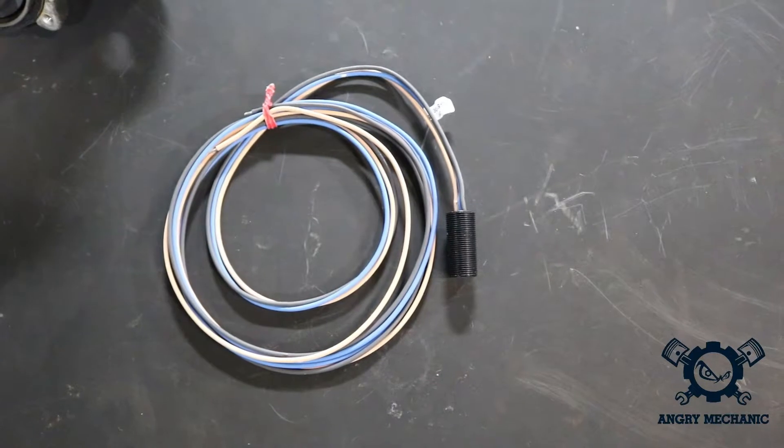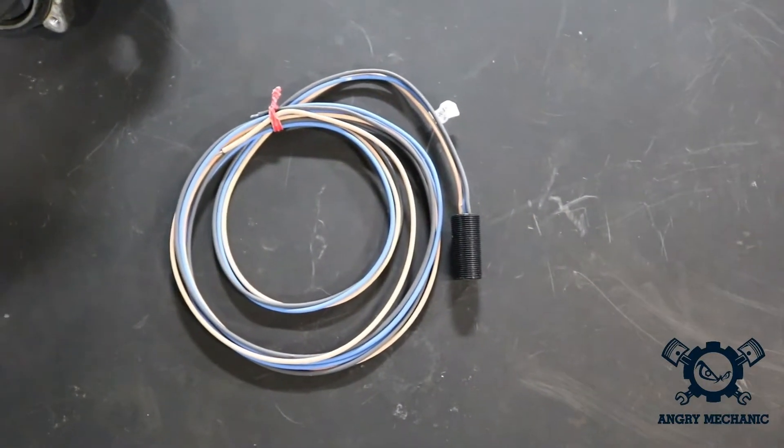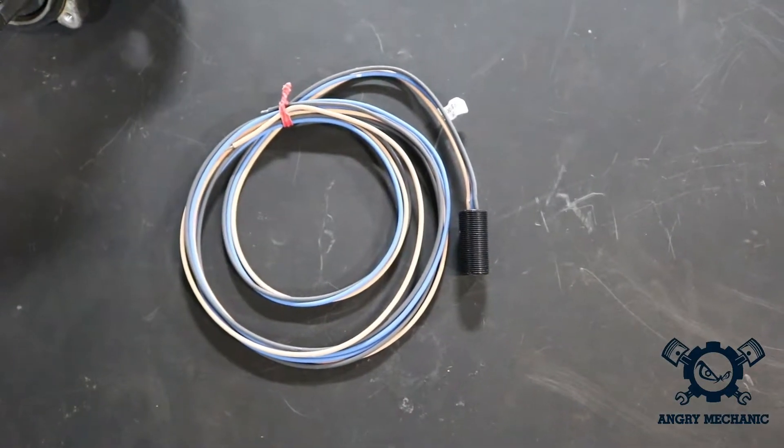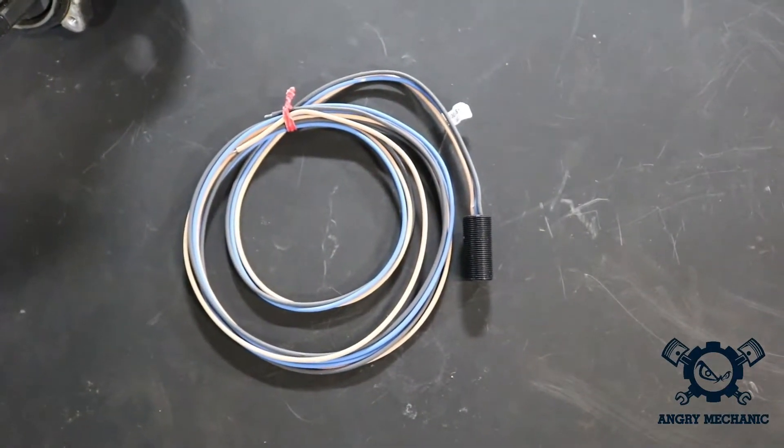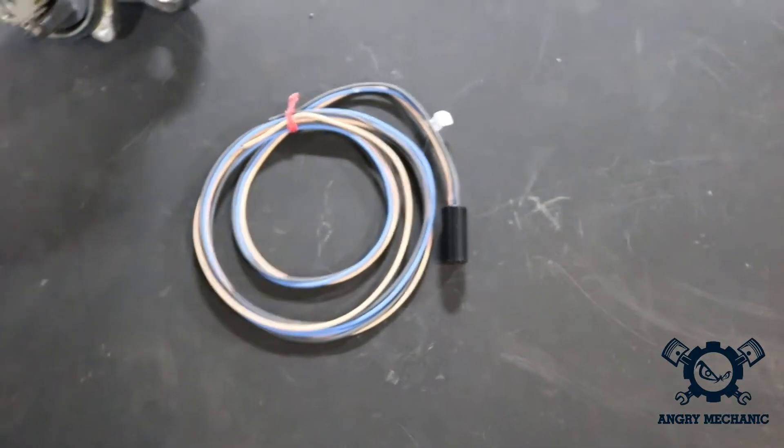And this sends out a digital signal, a digital square wave signal to the ECU, which is a much cleaner way of communicating, and it's easier to work with pretty much. I'll just show you an example of what a square wave signal looks like.